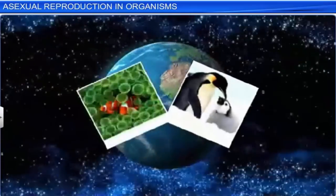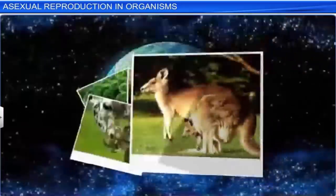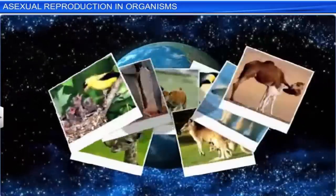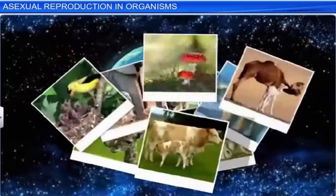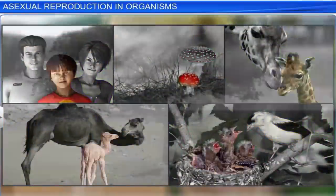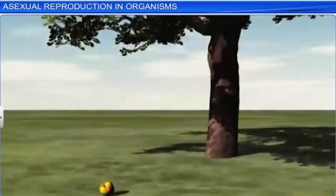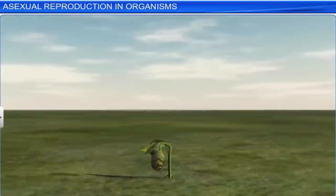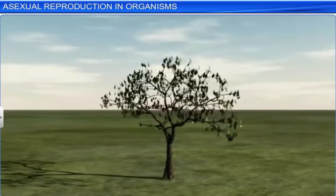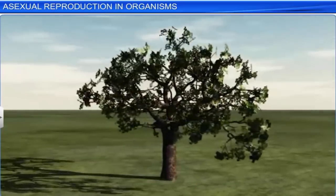Our earth is home to countless plant and animal species, all of which have a limited life span and are bound to die. Yet these species have existed for several thousands of years. That's because living organisms can reproduce — they give rise to offspring, which in turn grow and reproduce their own offspring of the same kind. This ensures survival of the species generation after generation.